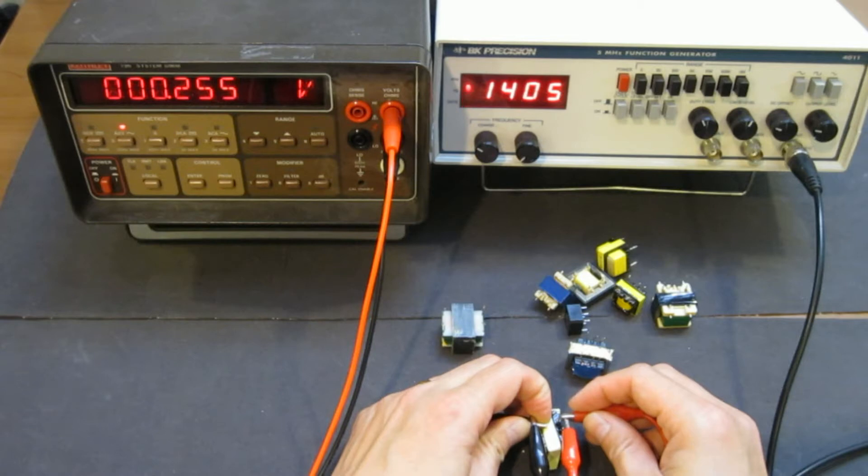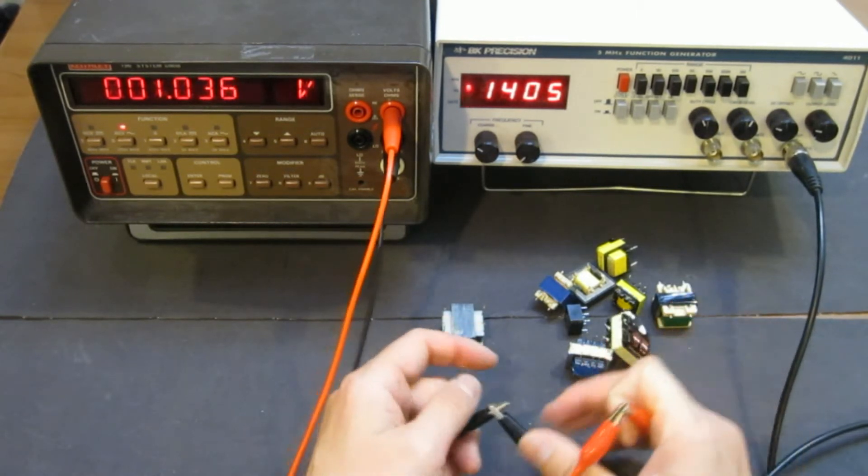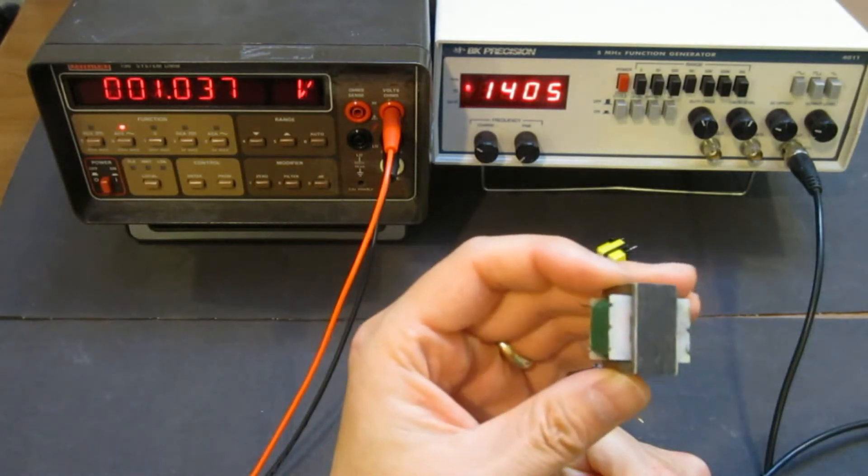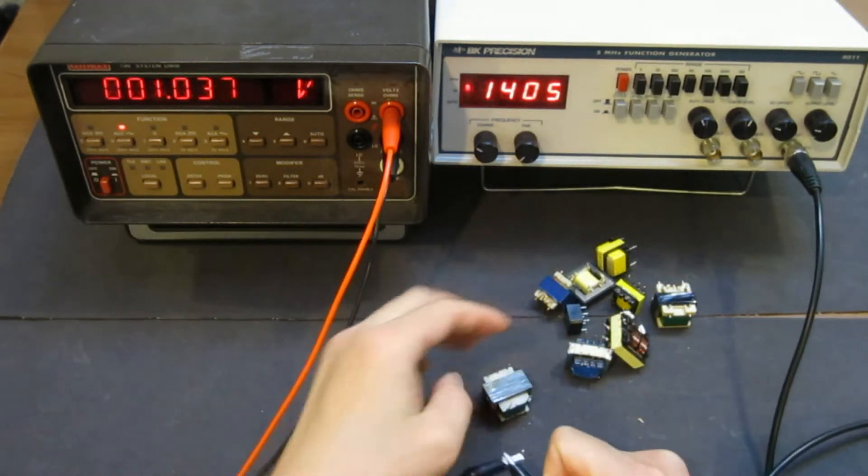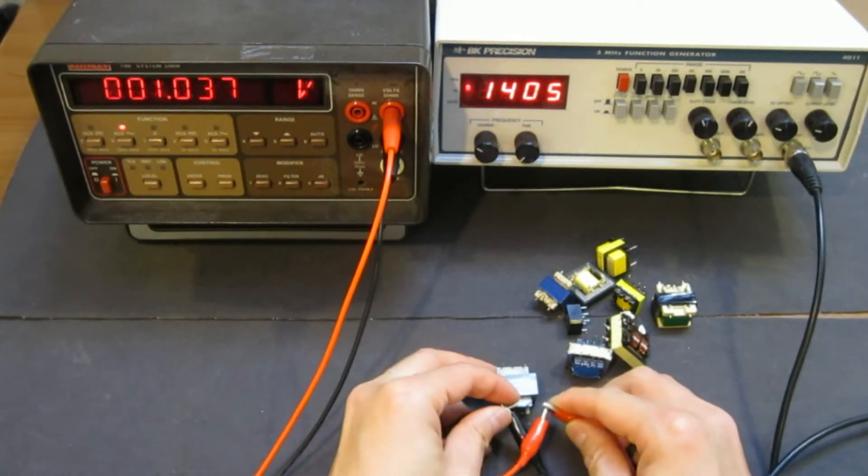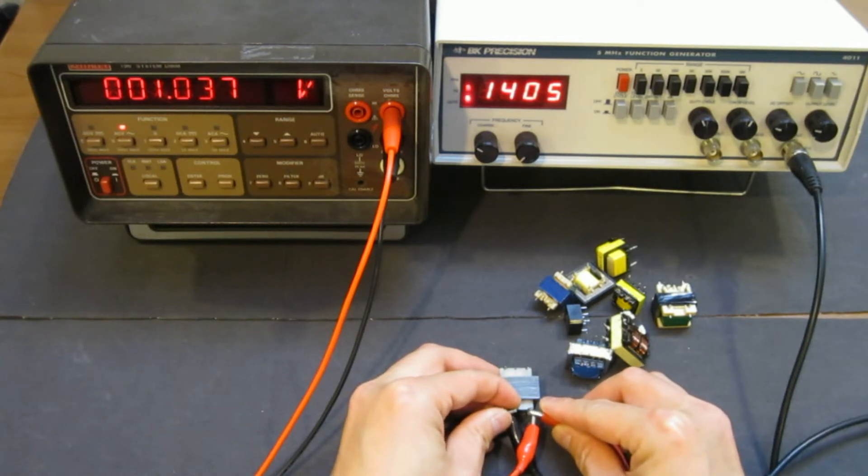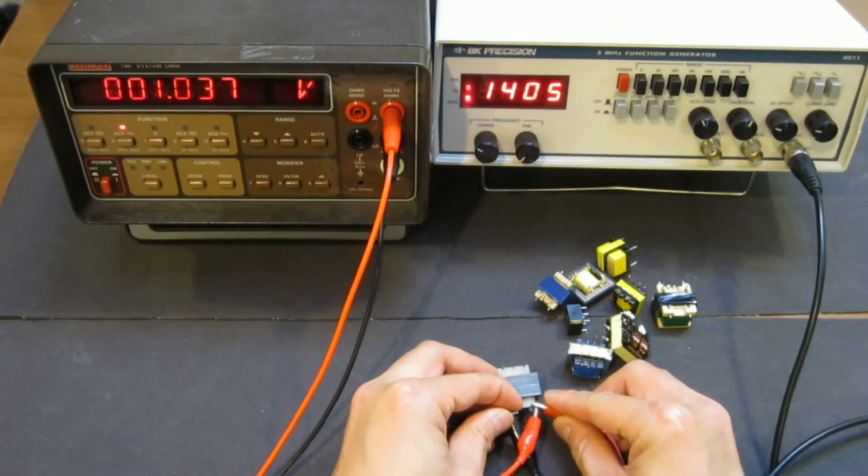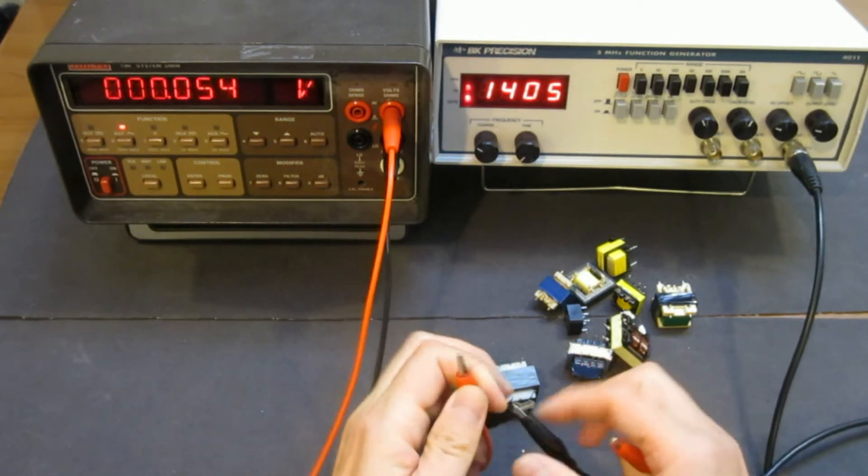So you'll see that output voltage drop to 0.5 from the function generator. But if we put it on this transformer, which has a very large inductance, then you can see that the voltage doesn't change at all. So that's just something we need to pay attention to.